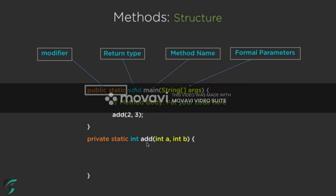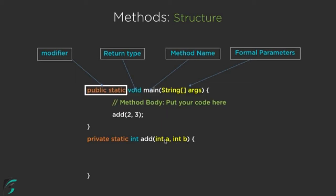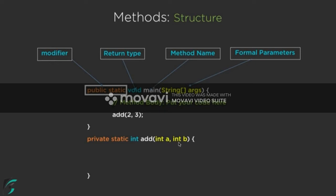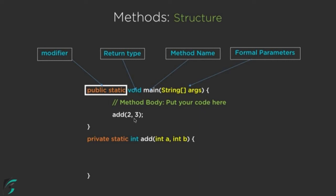Here 'add' is the user-defined method name, and int a and int b are the formal parameters. Always make sure the signature of the method call matches the method definition — since we are passing 2 and 3 as integers, the parameters must be int a and int b, not String a and String b.